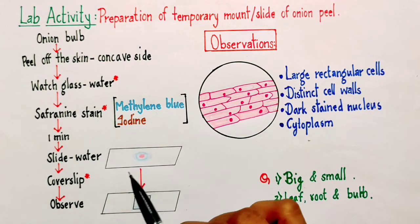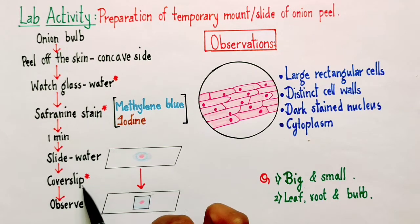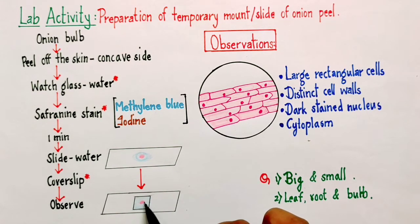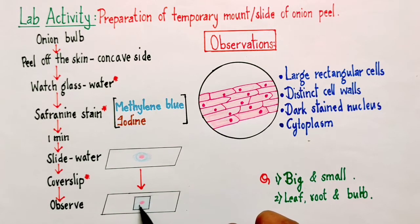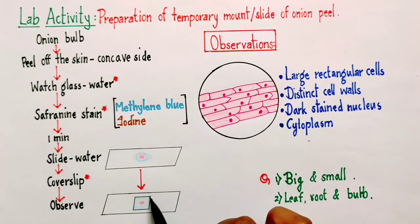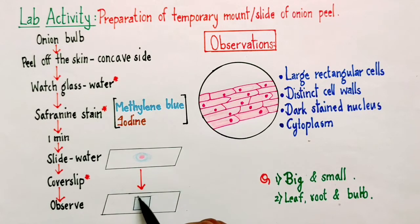First and foremost thing is that the cover slip will prevent this sample from drying. It will prevent the cells from drying. Second thing, it will remove the excess of water and stain. If you happen to perform this experiment, you will be able to clearly notice that the moment you put this cover slip, all the extra water and stain will come out.